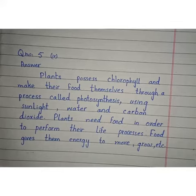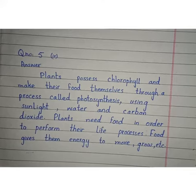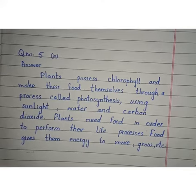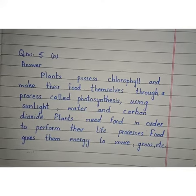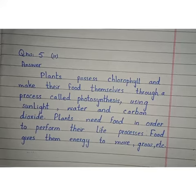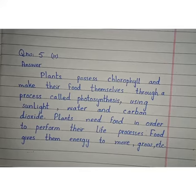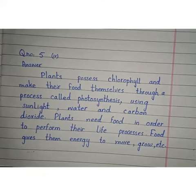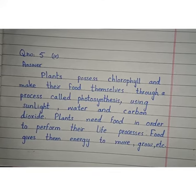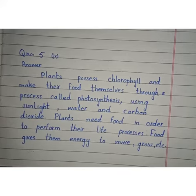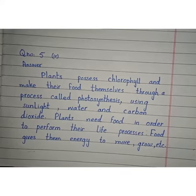Plants make their food themselves through a process called photosynthesis. To make their food, plants need the green color pigment chlorophyll, and they use sunlight, water, and carbon dioxide for photosynthesis. Why do plants eat food? Plants eat food in order to perform their life processes, and this food gives them energy to move, grow, etc.